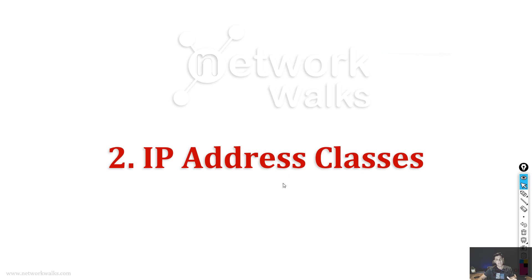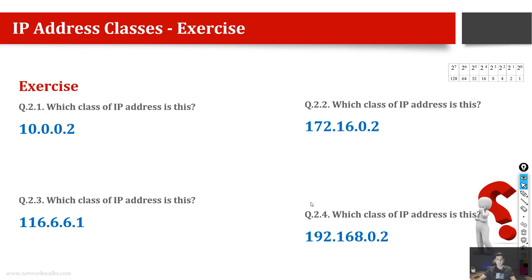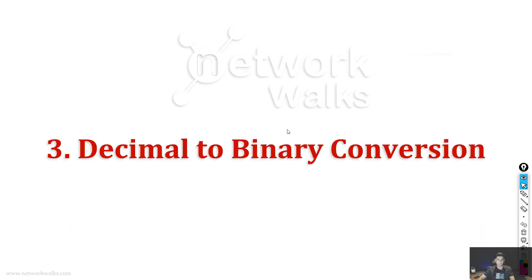In the second part, we will study IP address classes — what are the three classes: Class A, B, and C — and how we can subnetwork them further, how we can divide them further with practice examples.